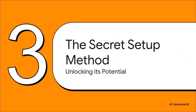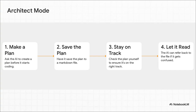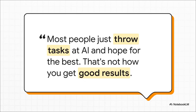Alright, time to get practical. Just having the tool isn't enough — you gotta know how to use it right. I'm going to walk you through the setup method that really unlocks its full potential. This is the secret sauce. It's called architect mode, and it's simple. Before you let it write a single line of code, you make it create a plan — step one. Then you have it save that plan to a markdown file. This lets you check its logic first, and the AI can actually read that file to get back on track if it gets confused. It's a simple process that prevents so many headaches. The way most people use these tools is they just throw a prompt at it and hope for the best — but that is a recipe for disaster. Taking a structured approach like architect mode is what separates the people who get amazing results from those who just get a mess of buggy code.